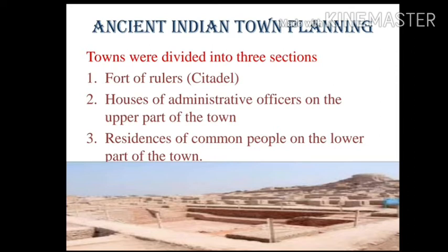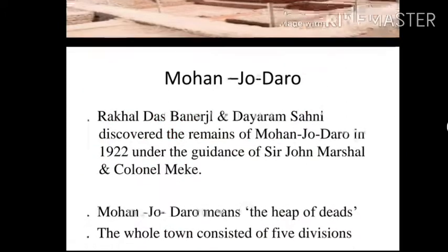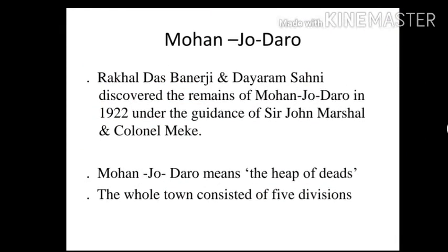The fort of rulers was constructed on the upper part of the town, which was safe and protected. Houses on the upper part had two to five rooms. Houses on the lower part of the town were mainly constructed with handmade bricks, and common people lived in this lower part.